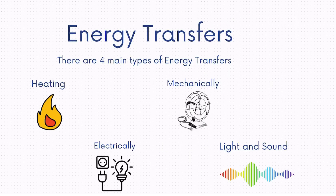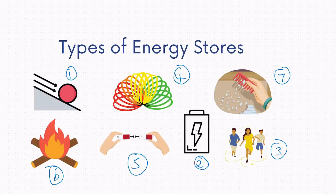Remember that transfers happen mechanically, by heating, electrically, and by light and sound. Also remember that these transfers occur between the seven stores in different examples — such as a wind-up toy, an electrical circuit, or a skier — and you'd be expected to be able to explain them.